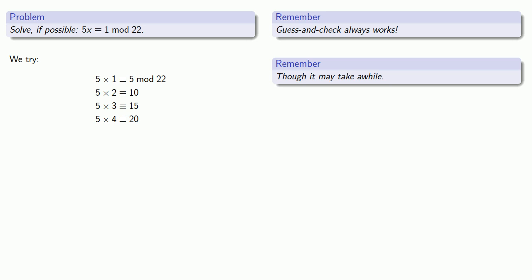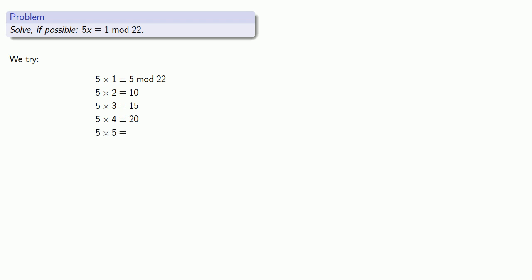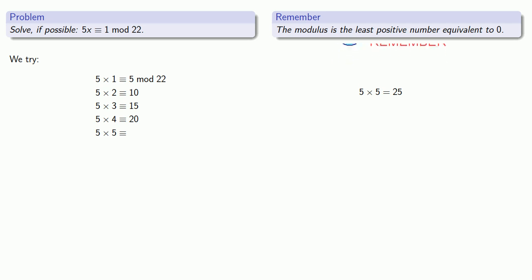And since all of these numbers are less than 22, they're not going to change mod 22. But what happens when we multiply 5 by 5? Well, 5 times 5 is 25. But remember, we're working mod 22, and the modulus is the least positive number equivalent to 0. And so this 25, I can think about that as 22 plus 3. And since we're working mod 22, the modulus is the least positive number equivalent to 0. So this 22 is like a 0, so we don't need to write it as long as we remind the reader that we are working mod 22. So 5 times 5 is 3.